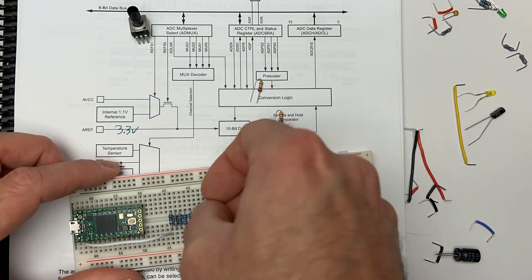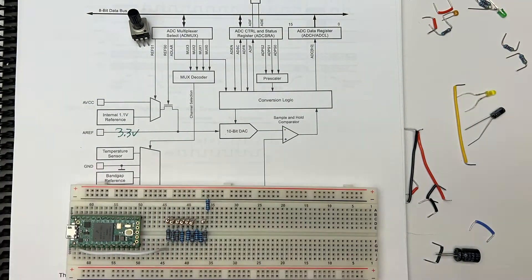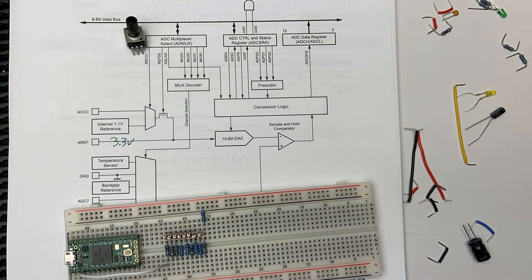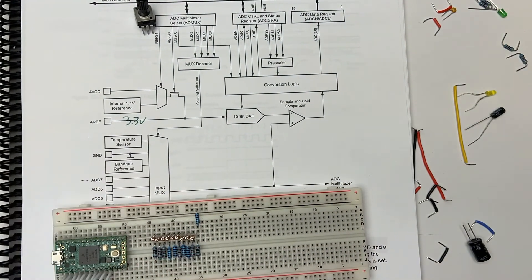To make this a bit easier, I'm going to use a Teensie 4.0 to handle the clock and control logic. We'll wire up a 10-bit DAC using 500 ohm resistors for the R, 1 kilo ohm resistors for the 2R.